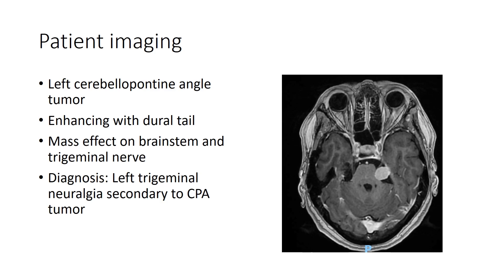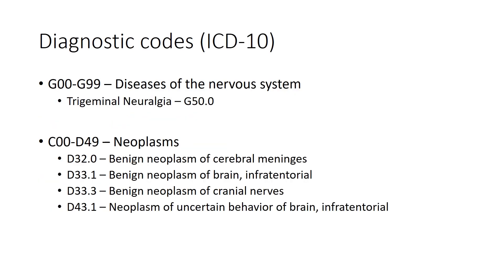The diagnosis is left trigeminal neuralgia secondary to a cerebellar pontine angle tumor. The first step is to obtain an appropriate diagnostic code using the ICD-10 diagnostic nomenclature. For the patient's primary complaint of trigeminal neuralgia, under the section on diseases of the nervous system from G00 to G99, the diagnosis for trigeminal neuralgia is G50.0.